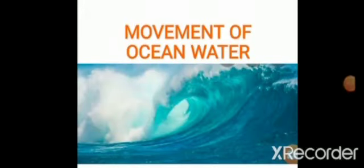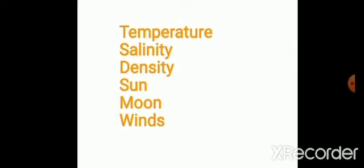Hello students, have a nice day. In the last class you learned about oceans and the relief features of oceans. In this section we will learn about the movement of ocean water. Temperature, salinity, density, the Sun, Moon, and wind cause the movement of water. Waves and currents move in horizontal directions, while tides move in vertical directions.